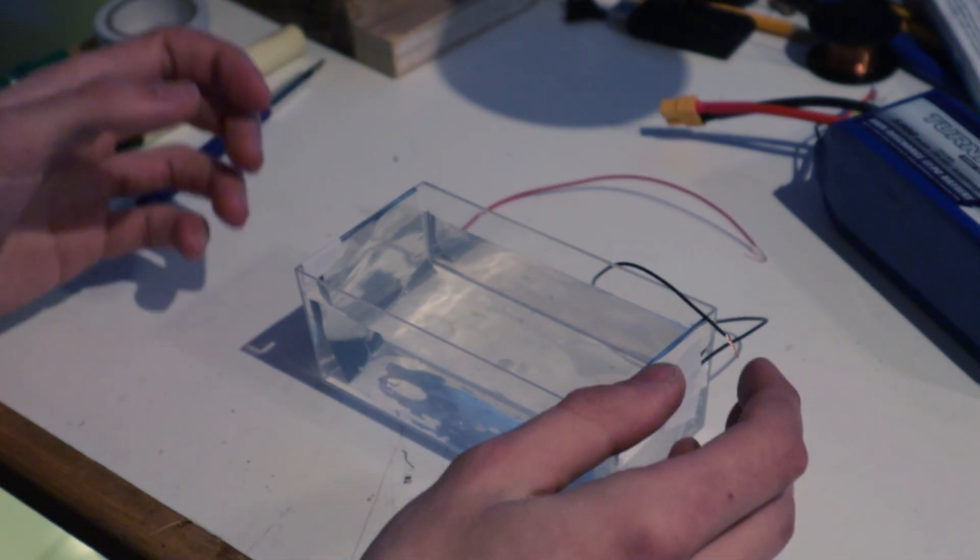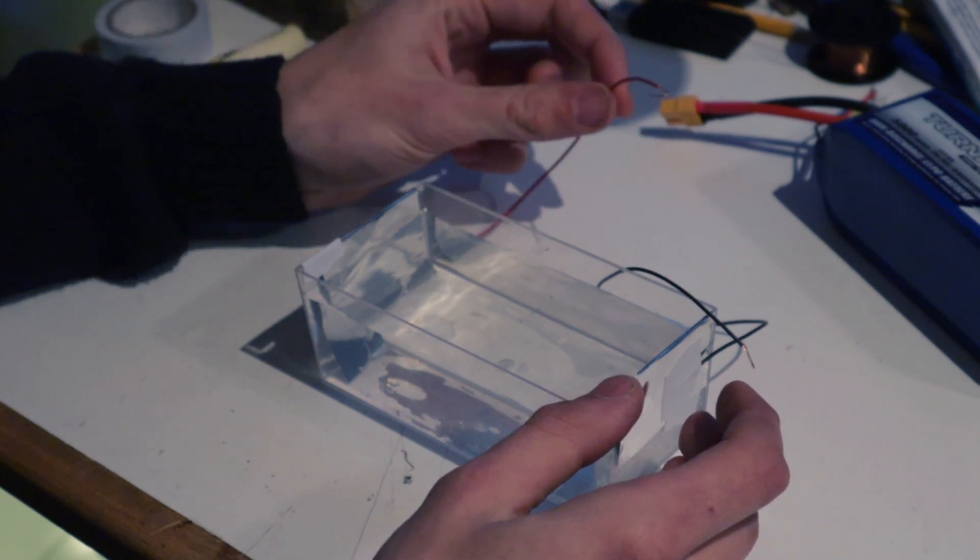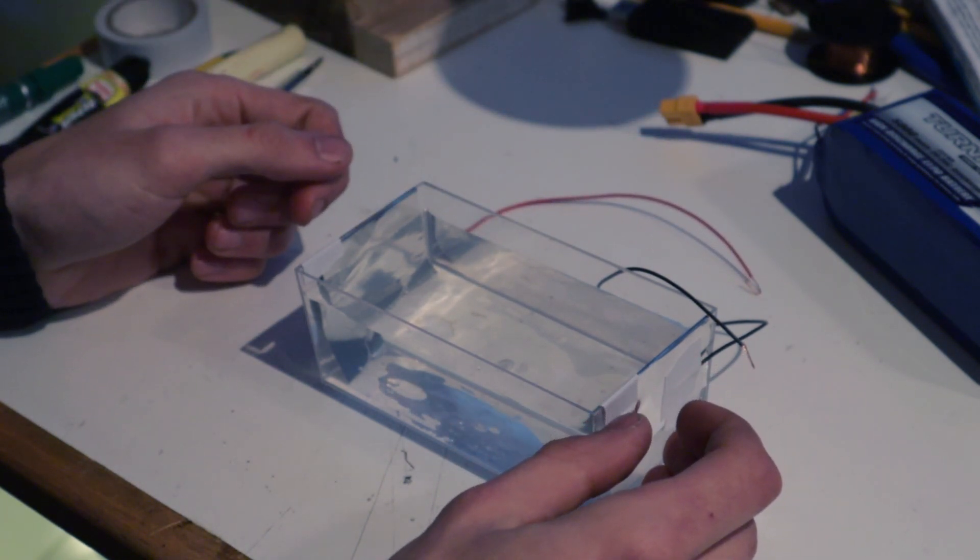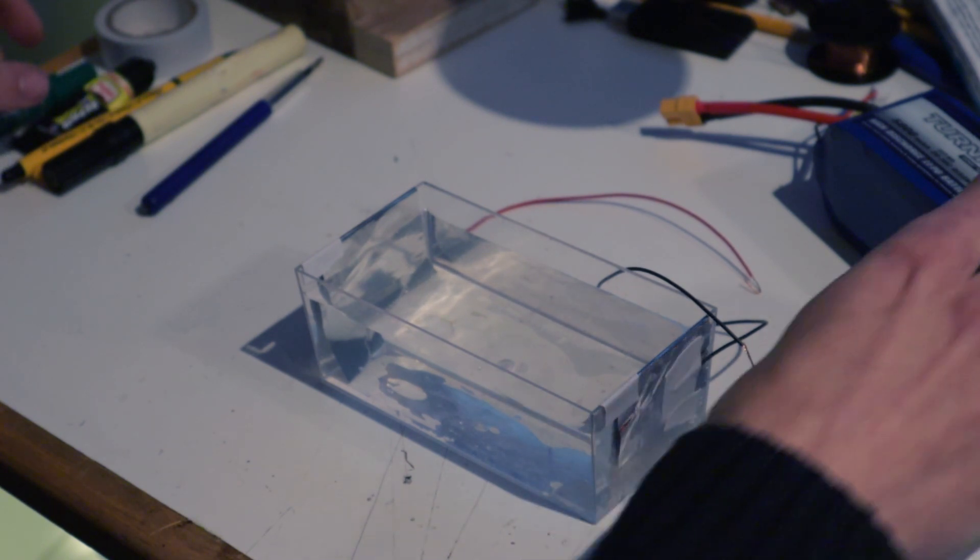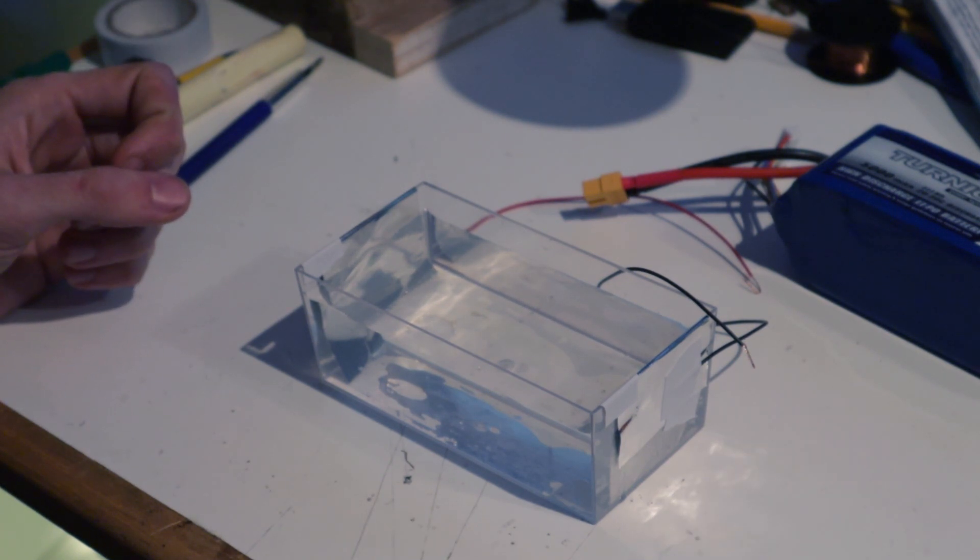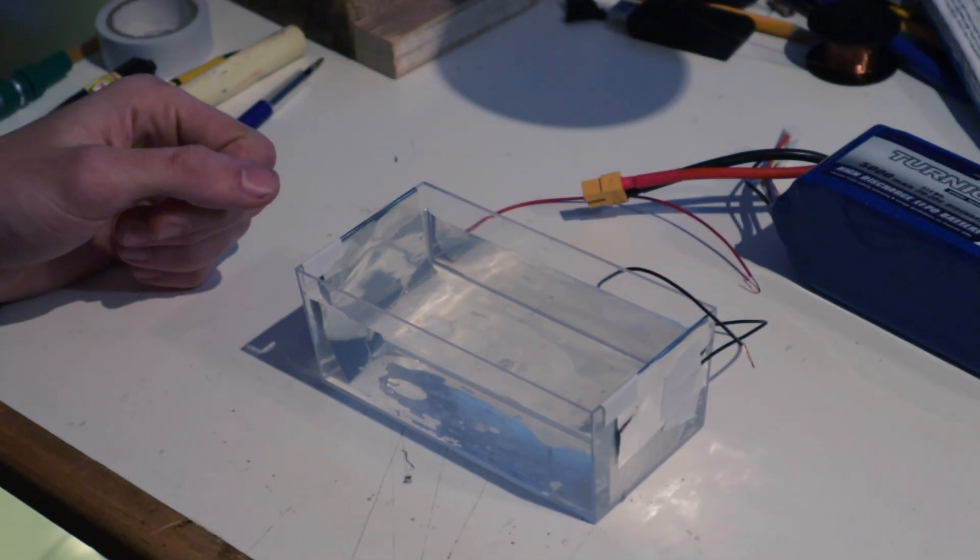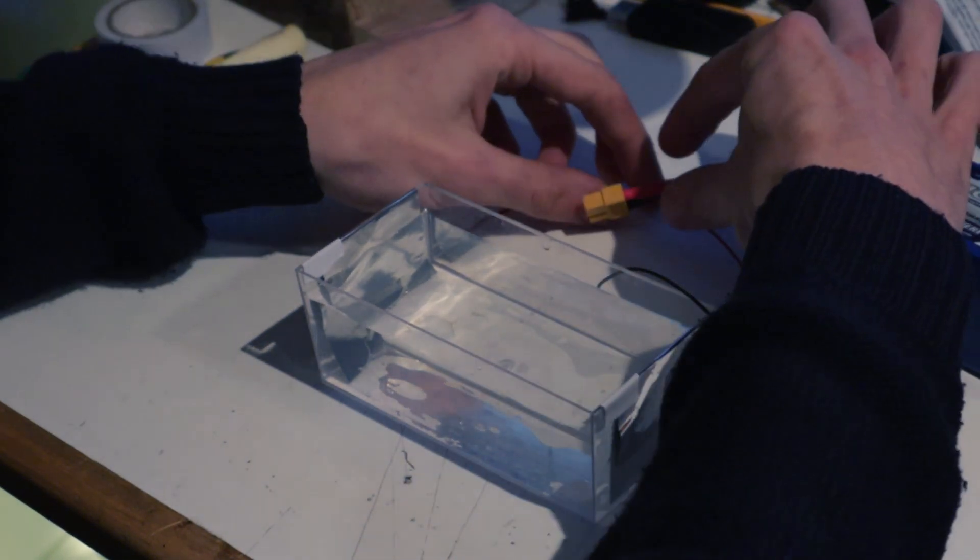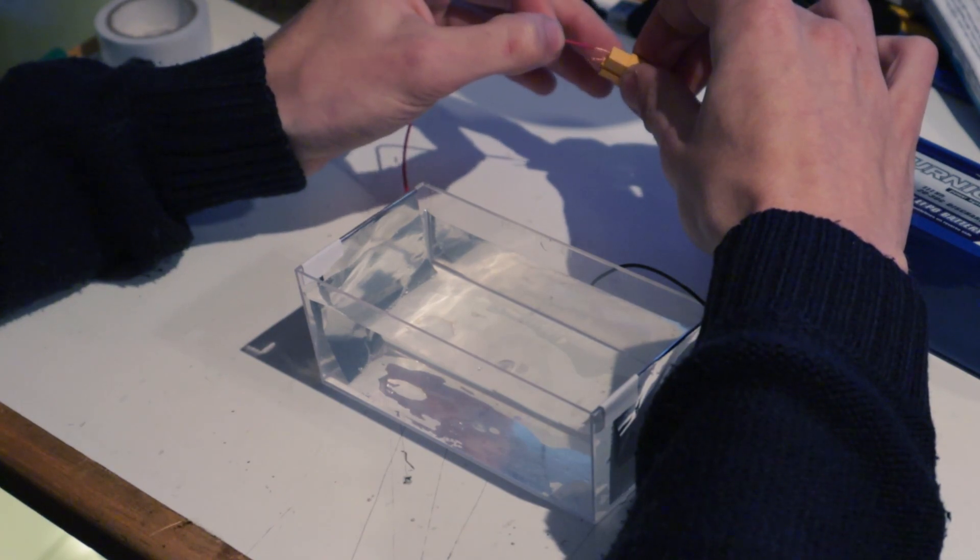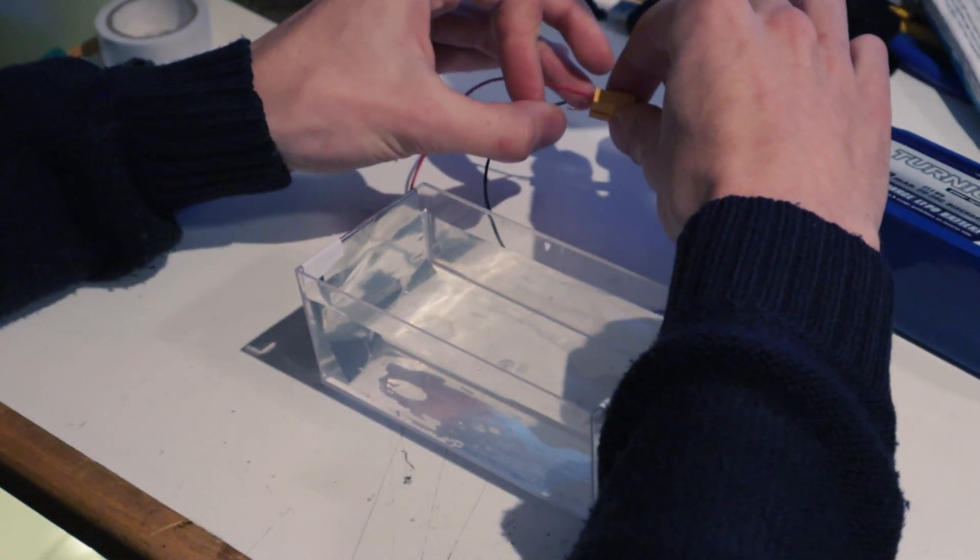And as you might have guessed, that means this is the negative side of the electrolyser, and this is the positive side of the electrolyser. And over here I've got a battery, which is a 22 volt battery. Now it doesn't really matter that it's 22 volts for this, but let's just connect this device to the battery and have a look at what's going on. And connect the red wire to the positive side of the battery, and the black wire to the negative side of the battery.